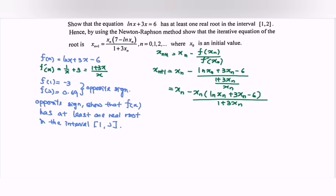So kindly equate the denominator. So in here we have xₙ(1 + 3xₙ) - xₙ(ln xₙ + 3xₙ - 6) over (1 + 3xₙ).